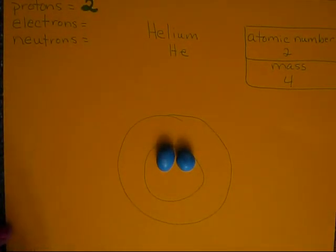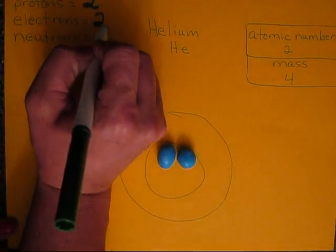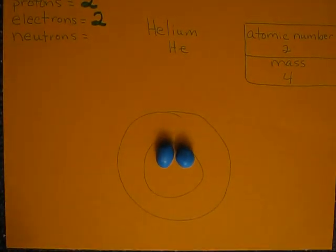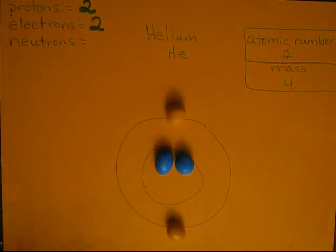Your number of electrons must match the number of protons. So there are 2 electrons. The electrons will go in the electron cloud around the nucleus.